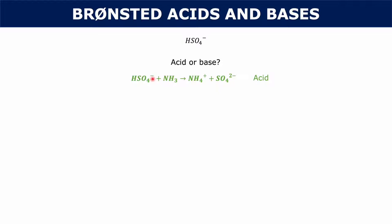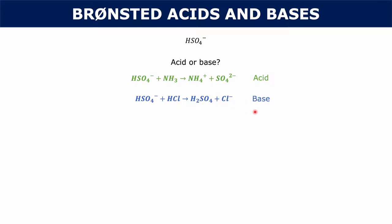In this case, HSO4- can act as an acid by giving off a proton and turning into SO4 2-, the sulfate ion. The hydrogen sulfate can react with ammonia, giving one of its protons to ammonia to produce the ammonium ion and the sulfate ion. On the other hand, hydrogen sulfate can also act as a base — it can accept a proton. Hydrochloric acid can react with hydrogen sulfate to produce sulfuric acid and a chloride ion, so here hydrogen sulfate acts as a base.